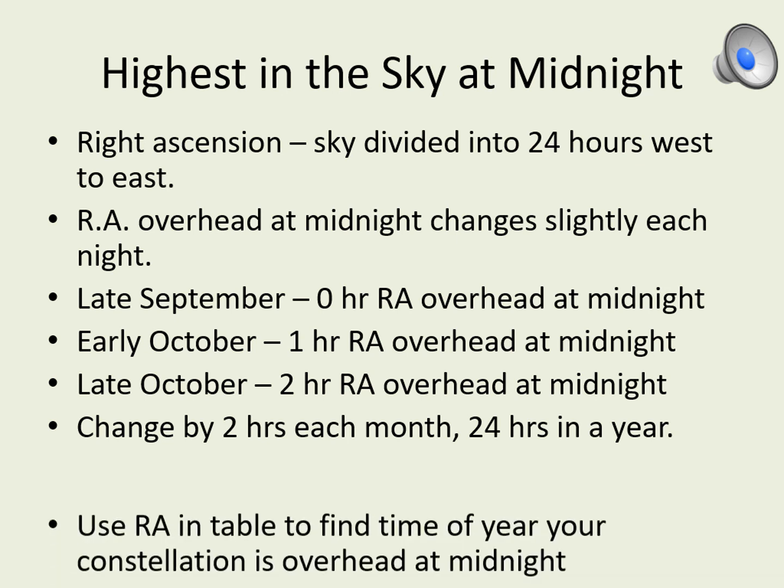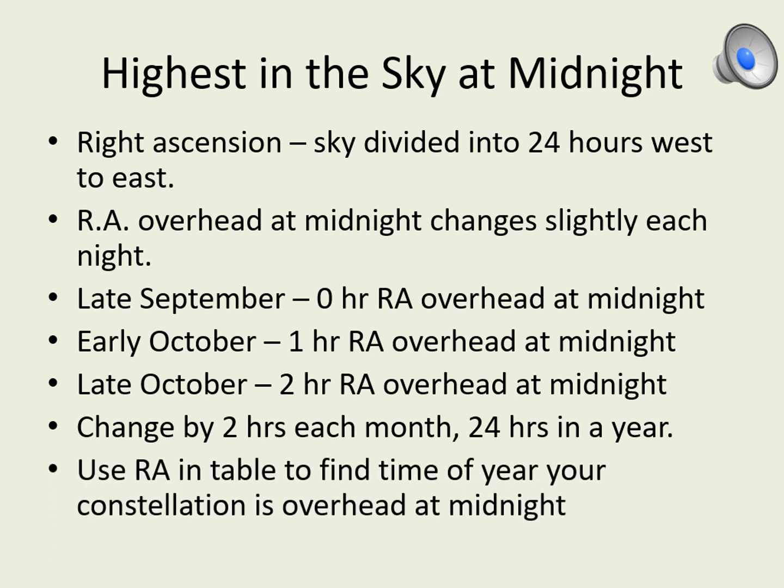In this part of the question, you should look at the right ascensions of the stars in your constellation and decide what time of year they'll be overhead at midnight. As with the declination question, it's okay to group the stars. If all your stars have a similar right ascension, you can say they will all be highest at the same time of year. If you have a range of right ascensions, say which ones will be overhead at midnight at which times of the year. Remember to list the data that supports this.